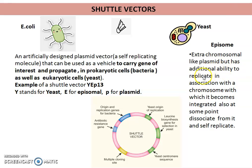What is the additional ability of an epizome? It can replicate in association with the main chromosome of the organism. Plasmids do not depend on the main chromosome at all — that is one main difference. An epizome can replicate in association with the main chromosome, with which it gets integrated, but at some point it can dissociate and self-replicate just like a plasmid. That is the main difference between an epizome and a plasmid.